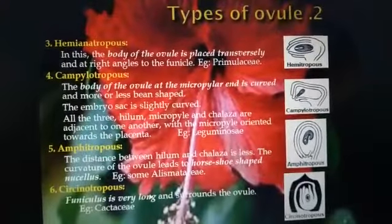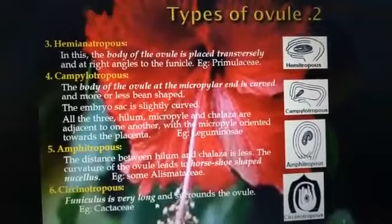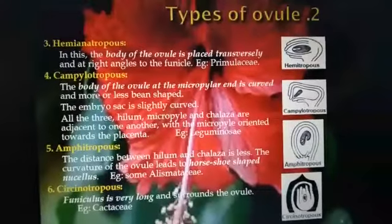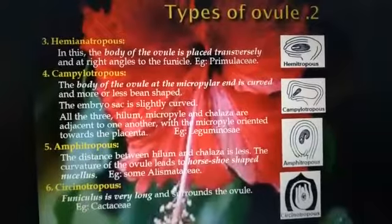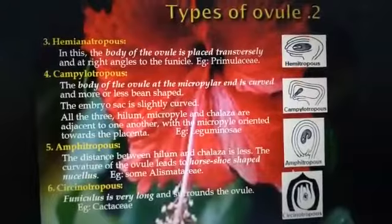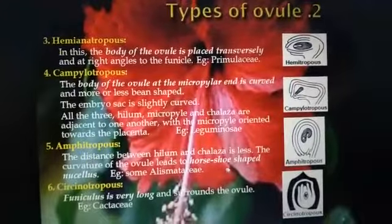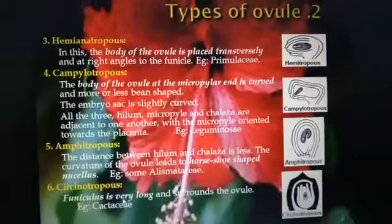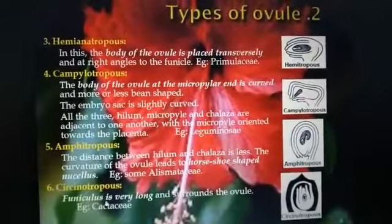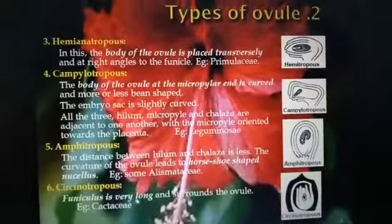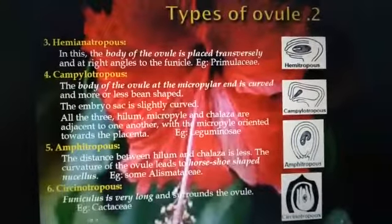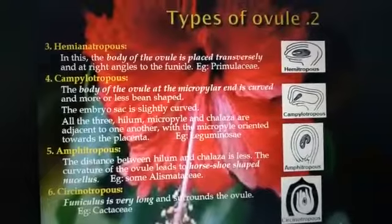The last type is the circinotropous ovule. Here the funicle is very long and it surrounds the other parts of the ovule. The body of the ovule is much coiled, resembling a mosquito coil, making many circles or coils around the body of the ovule. This is called the circinotropous ovule and is present in the Cactaceae family.